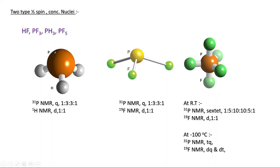Similarly in PH3, we will get three hydrogen doublets and one phosphorus quartet. The intensity ratio is 1:2:3:2:1 because the nuclear spin value is one-half. When the nuclear spin is one-half, the Pascal triangle rule is applied. If the spin is 1, a non-Pascal rule applies — you can see my previous video for those splitting patterns.